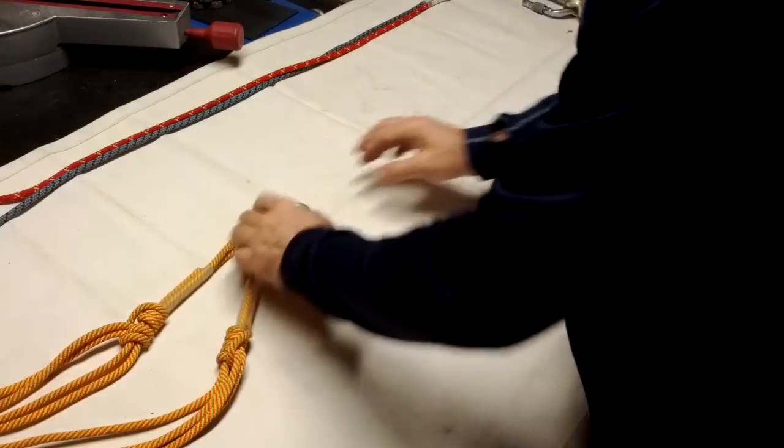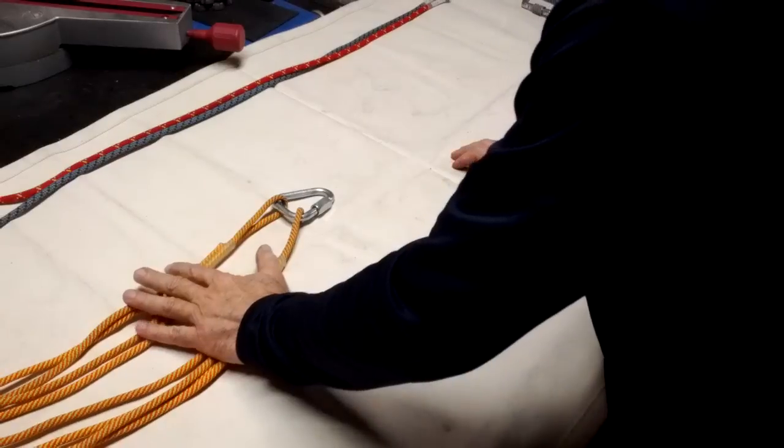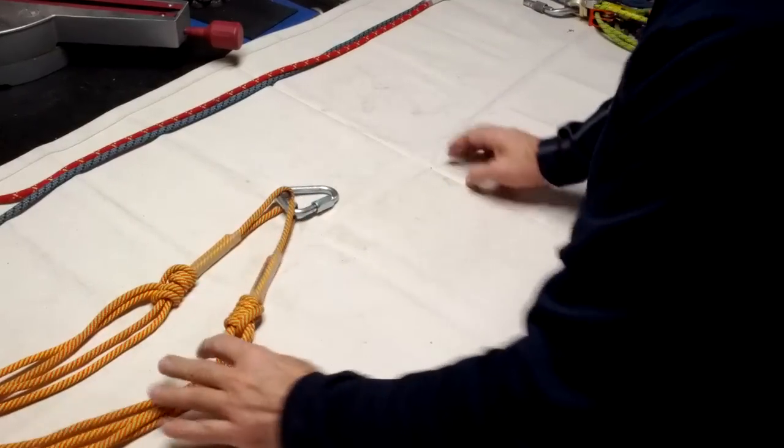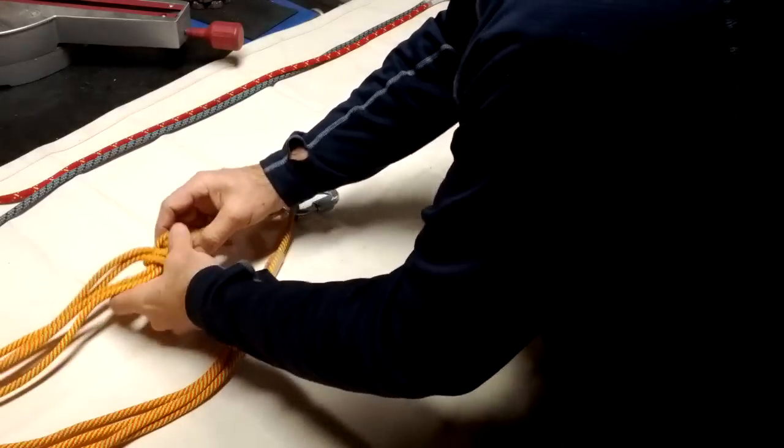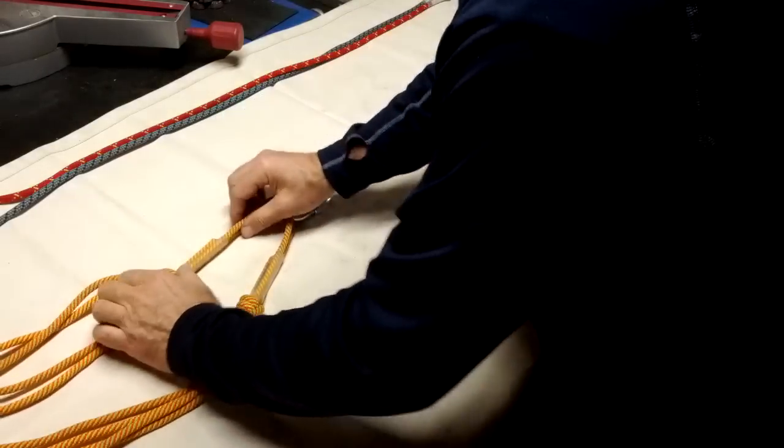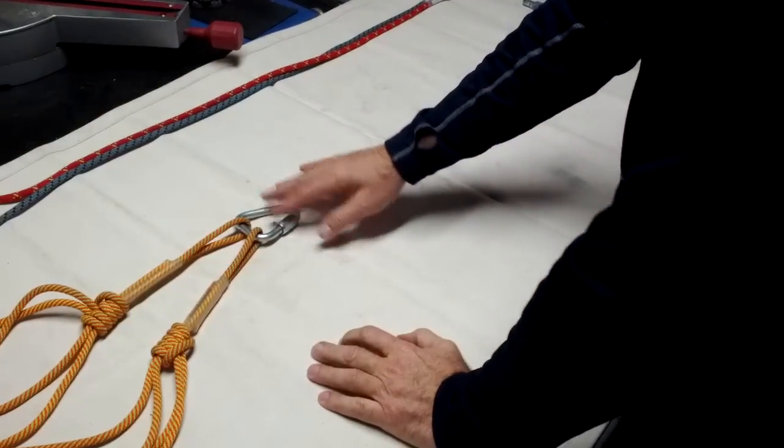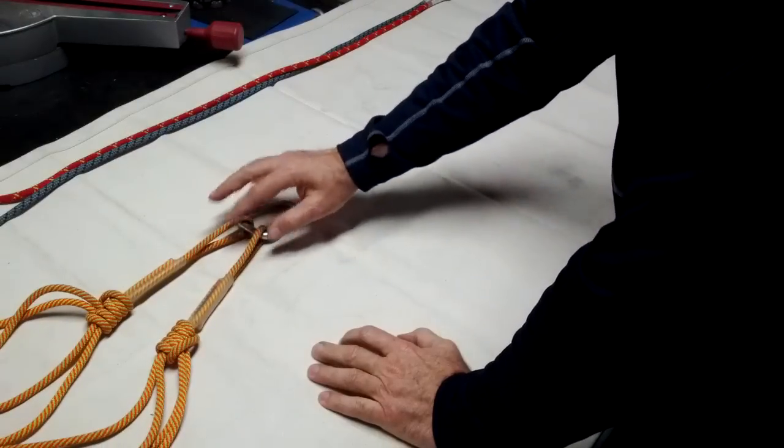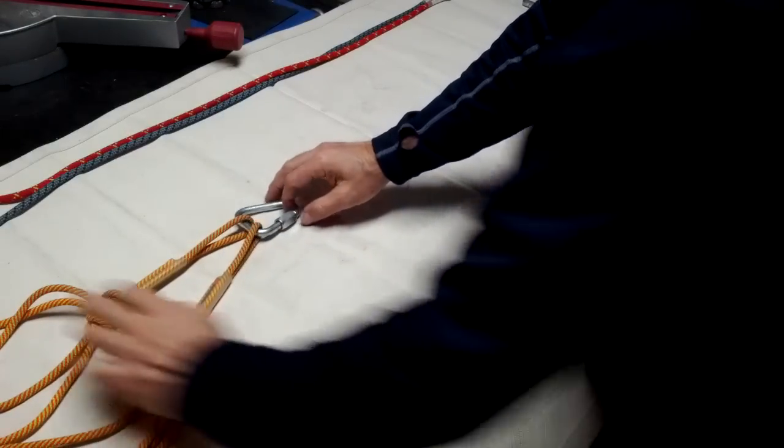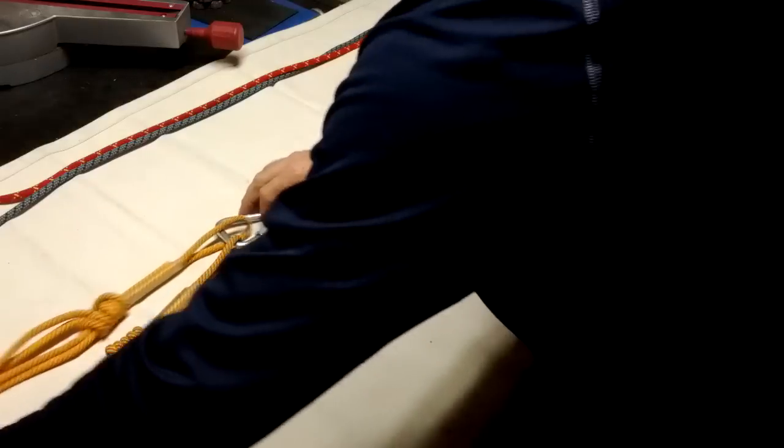In the head portion we have Purcell Prussiks, the yellow long ones. You want to make sure the Purcell knot is all the way up, and we're using a steel tri-link. We're not using a carabiner because of tri-axial loading here. That's for the head section.